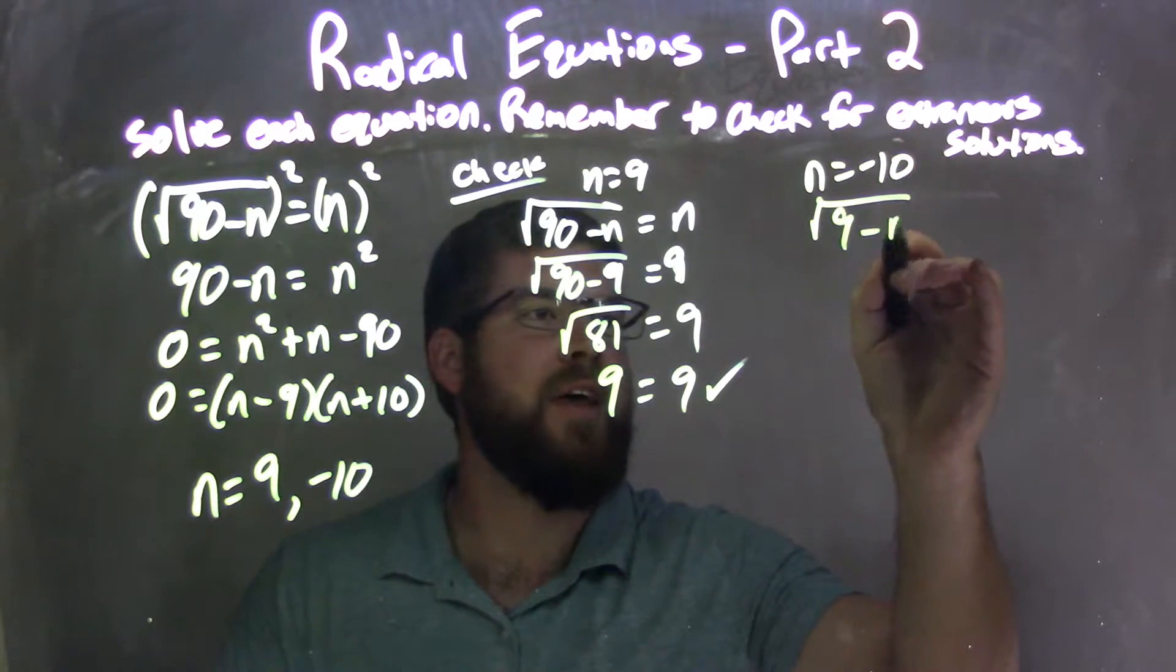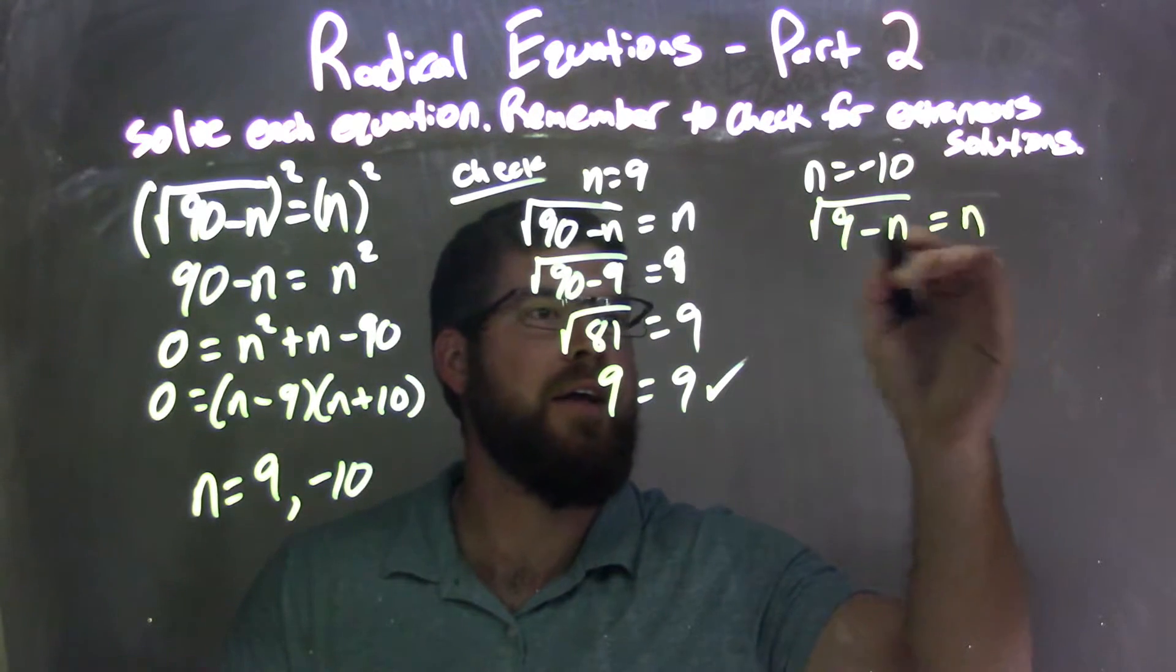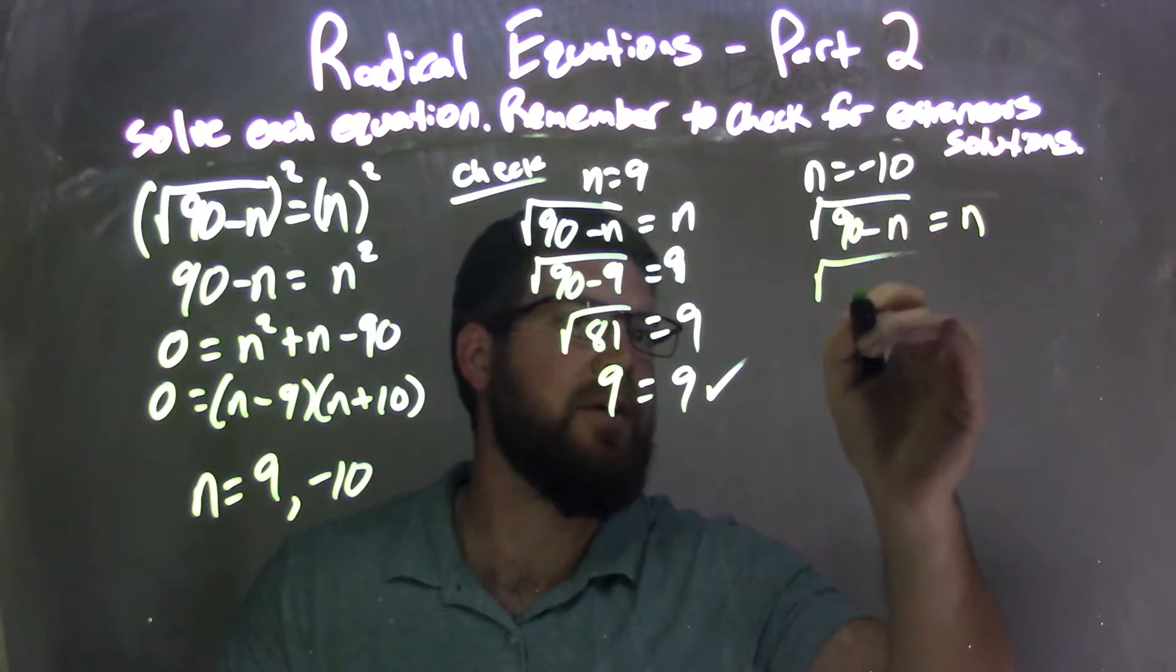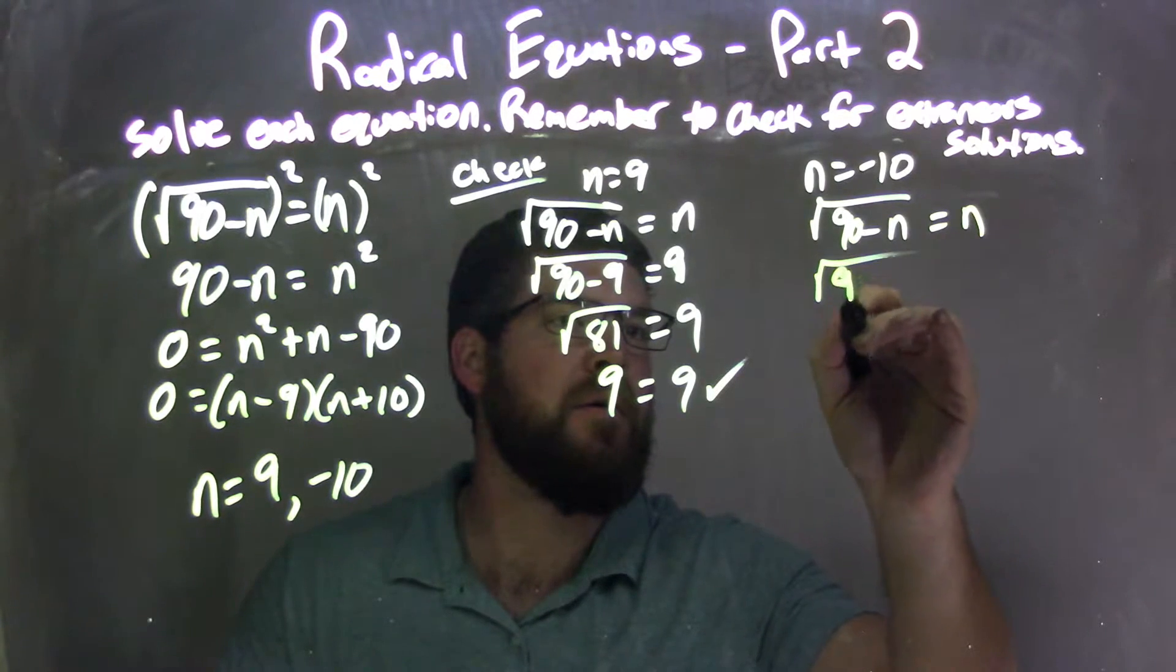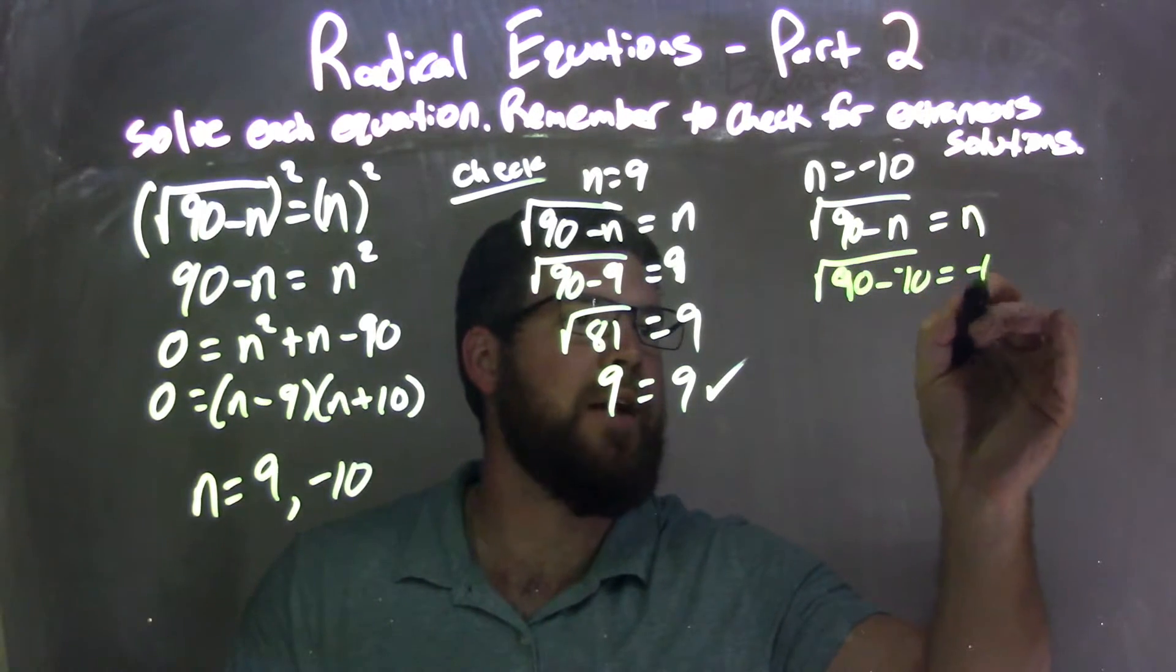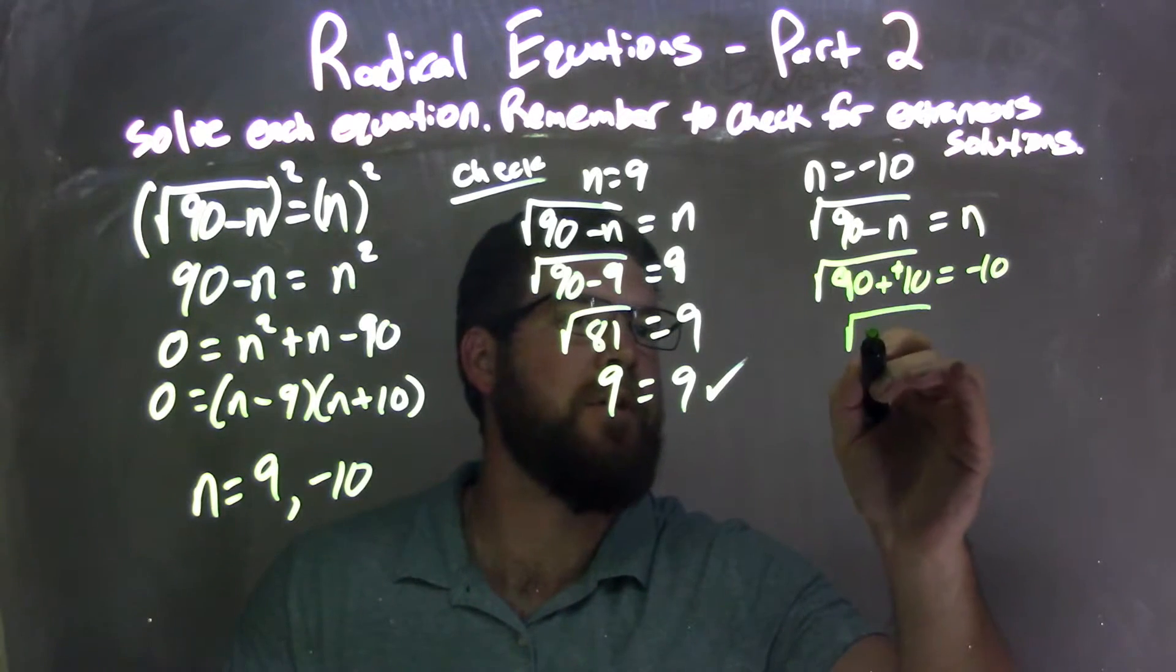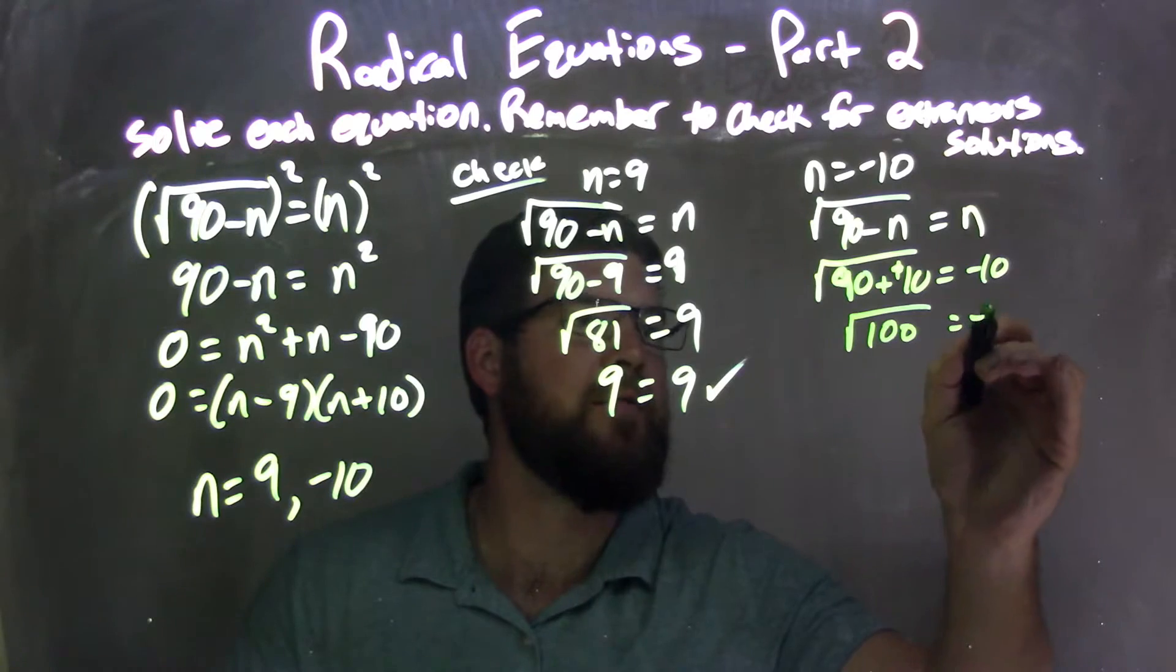So square root of 90 minus n equals n. Plug it in. Negative 10 goes in. So we have 90 minus a negative 10 equals negative 10. Subtracting a negative, same thing as adding a positive. So we're left with 100 here equals negative 10.